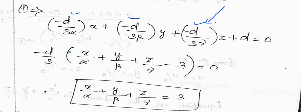After cancellation and rearranging, we get x/α + y/β + z/γ = 3. This is the equation of the required plane — proved.